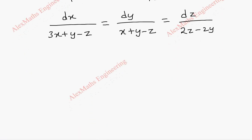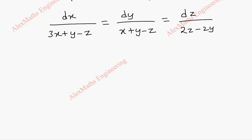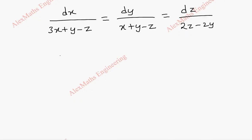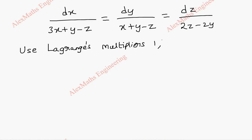Now we have to choose the appropriate Lagrange's multiplier in such a way to get the solution easily by reducing the terms. As a first part, we are going to use Lagrange's multiplier: this is 1, and if I multiply this with minus 3, then by adding, the 3 and 3x will get cancelled. And again, this is minus 1.